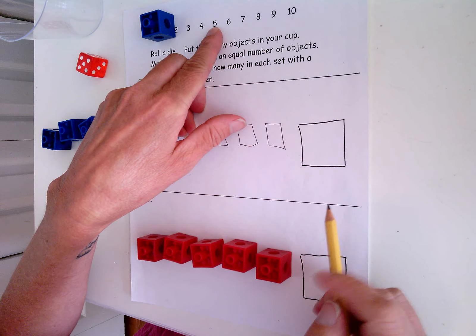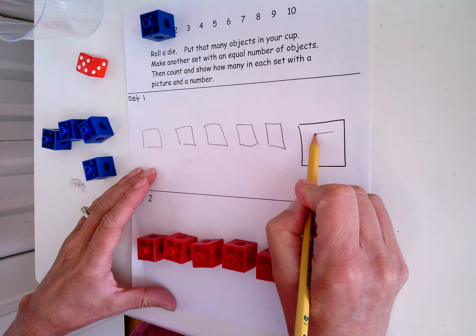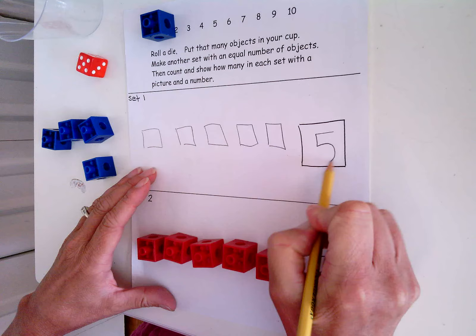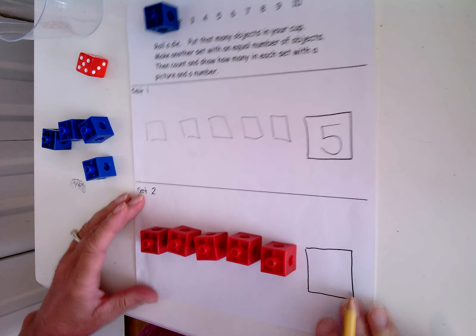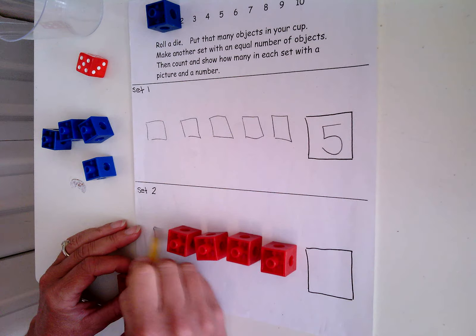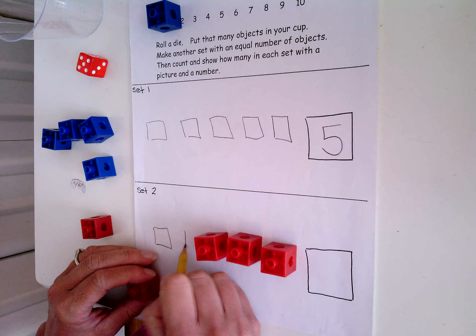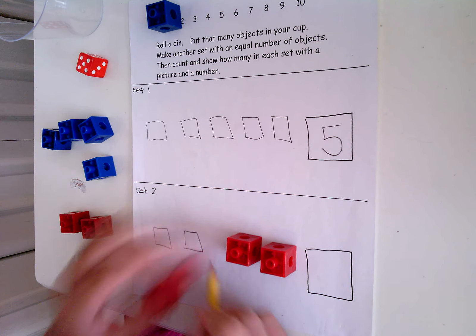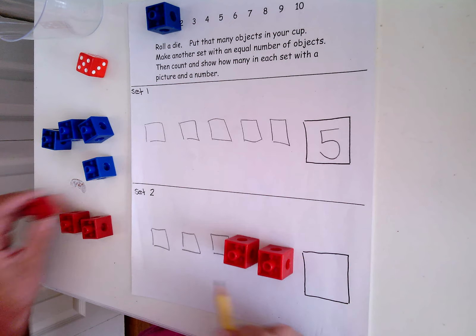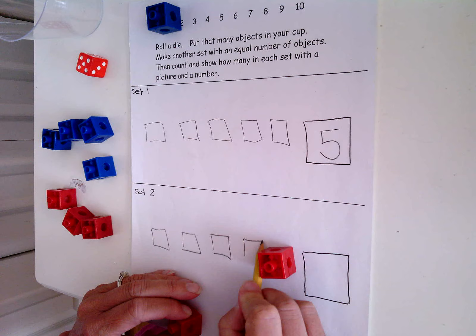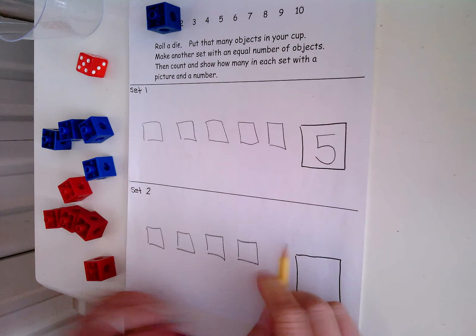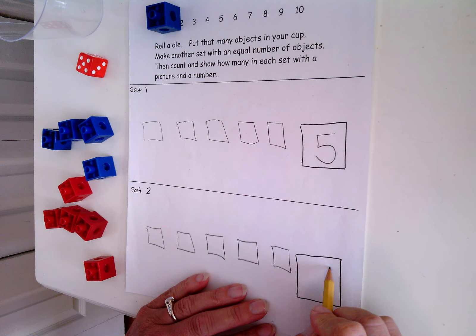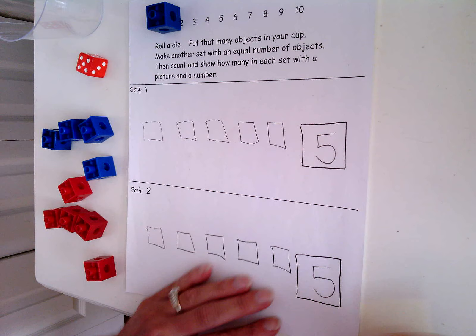And then I'm going to count these. One, two, three, four, five. A hat, a neck, and a big round tummy. Now I could color to match my picture if I want. One, two, three, four, five.